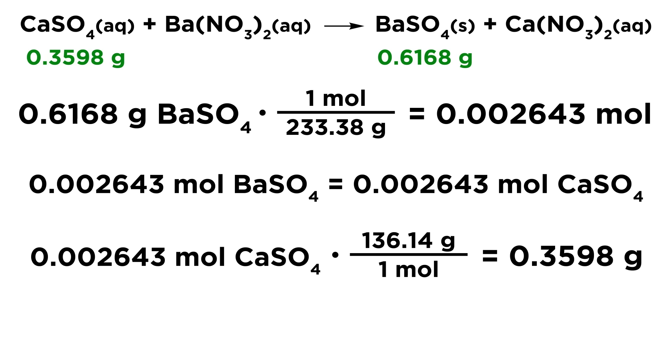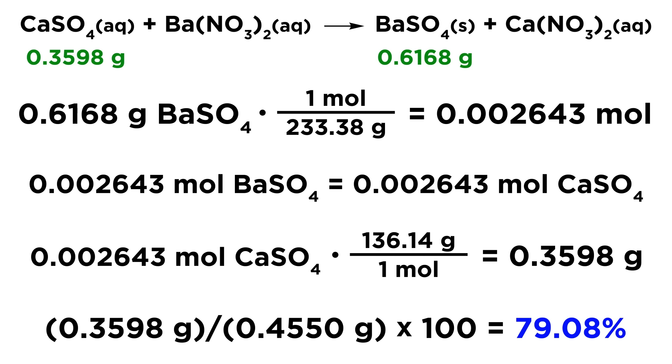So this gravimetric analysis allowed us to figure out what mass of calcium sulfate was in the solution. And so we just take the 0.3598 grams of calcium sulfate that were in solution and divide by 0.4550 grams, which was the mass of the initial solid mixture before we put it into solution, times 100, and we find out that 79.08% of that solid mixture was calcium sulfate.